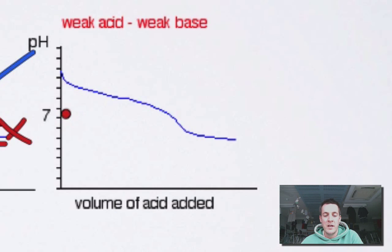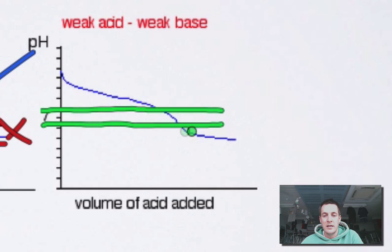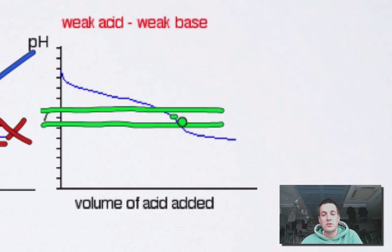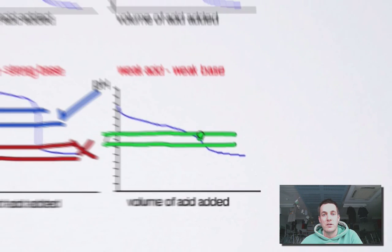Just to emphasise this point: even if we chose an indicator that had an endpoint exactly at equivalence in the weak acid/weak base titration, there'd still be quite a large range of volumes that would bring about that colour change. This is why it's very difficult to do a titration with a weak acid and a weak base — it's hard to choose an indicator that will change colour over a very narrow range of volumes. In other words, it's hard to choose an indicator whose endpoint matches equivalence.